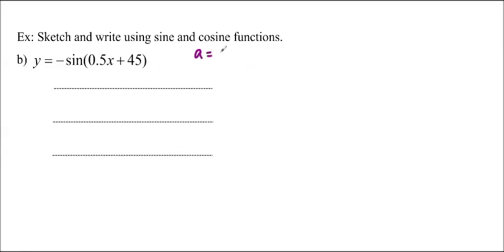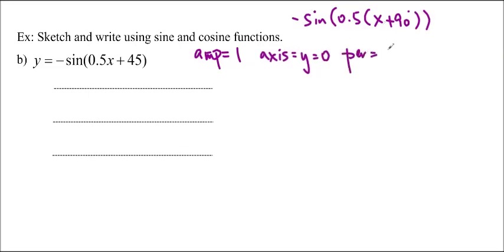So we're going to do this one. We can see that the amplitude is 1. And this is actually not factored, so we're going to have to factor it. So 0.5 times x plus 90 degrees. And then there's no axis, so the axis is equal to y equals 0. And I have a period equals 360 over 0.5, which gives us 720 degrees. And we have a phase shift to the left 90 degrees, because it's plus 90, so it goes into the left direction.